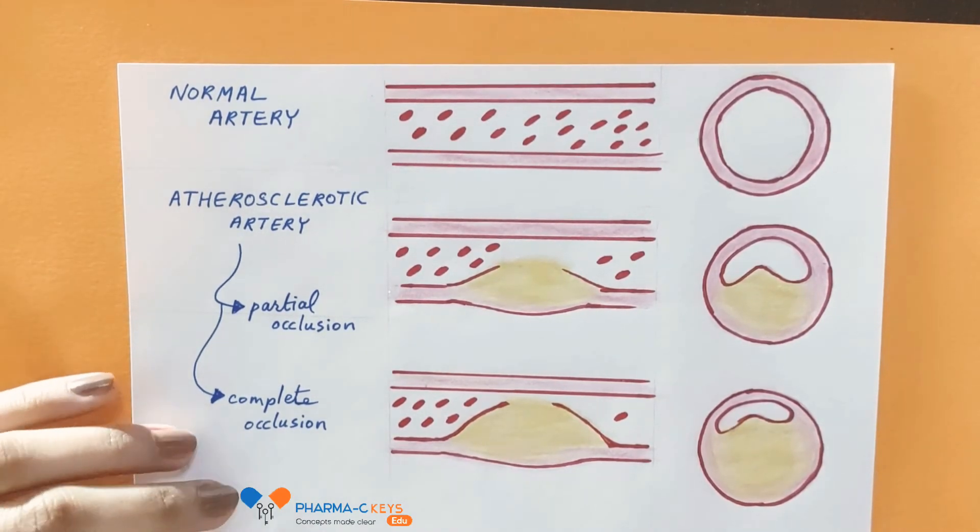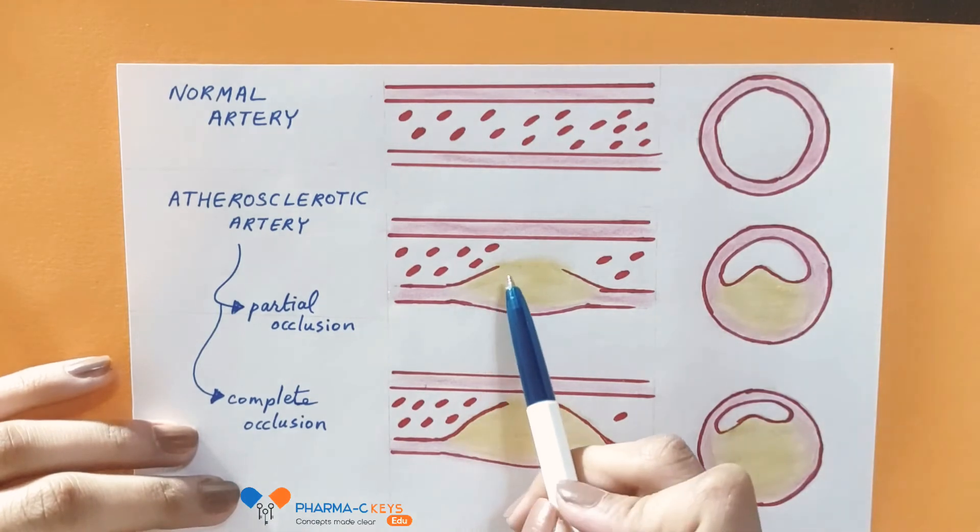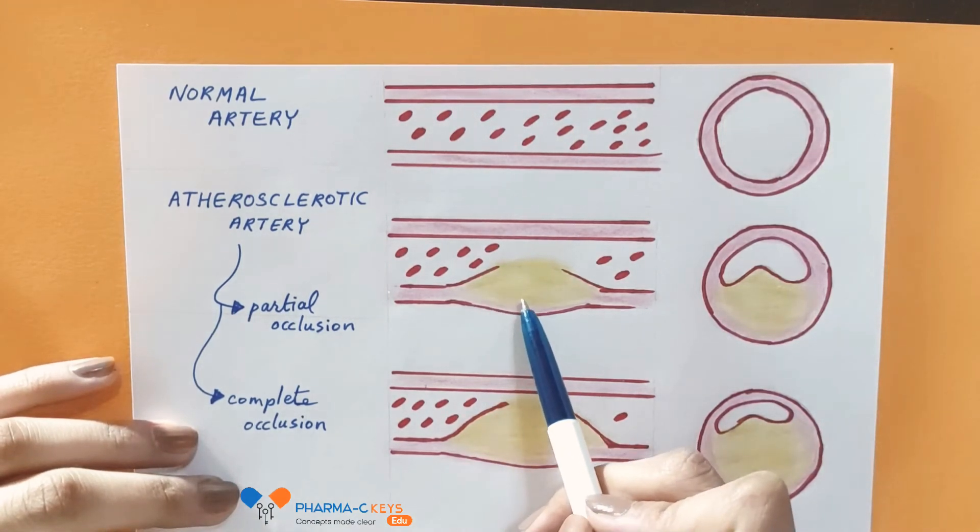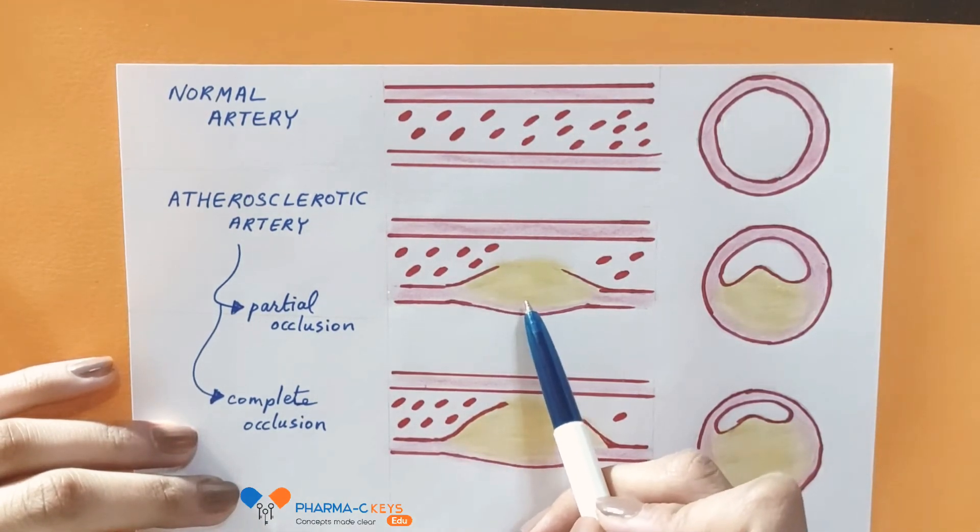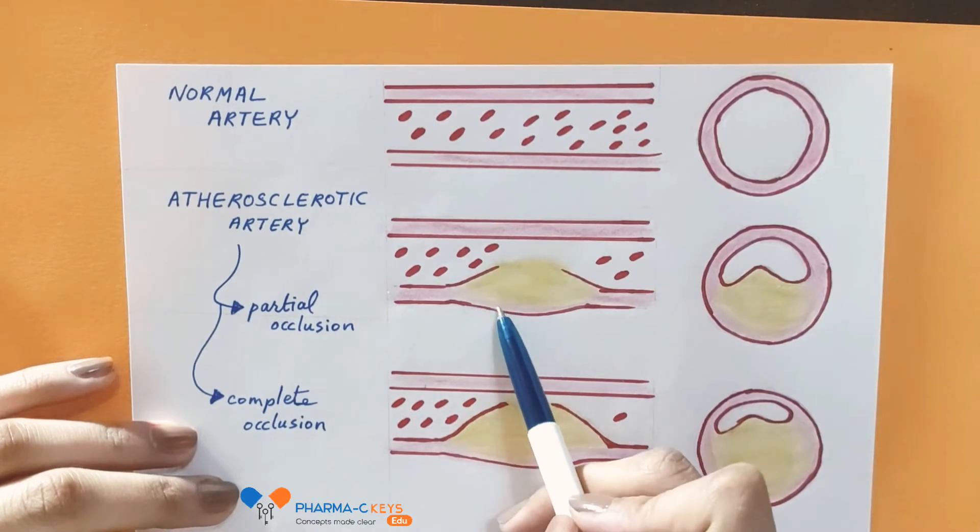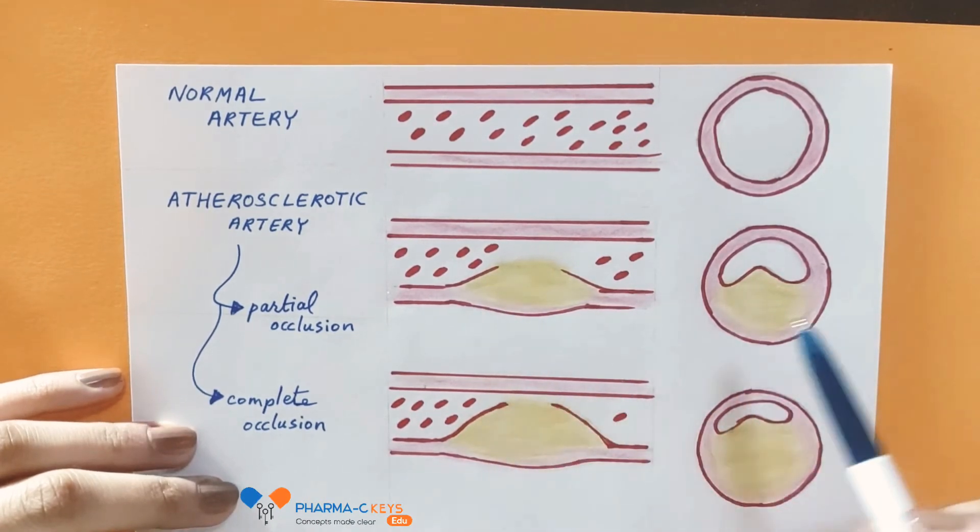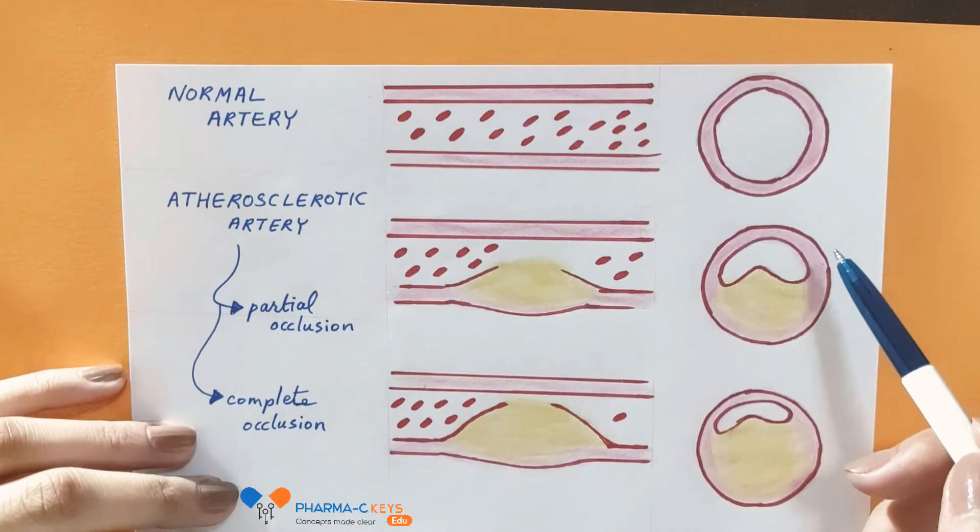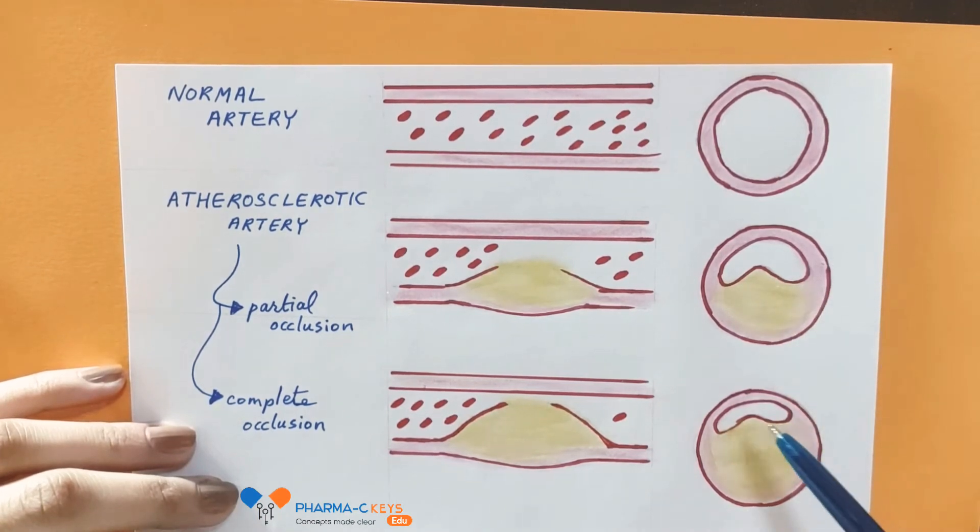Going back to the two processes, which are endothelial damage and progression into atherosclerotic plaque, these two processes lead to the occlusion of the arteries, whether it is a partial occlusion or a complete occlusion.